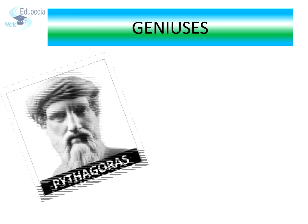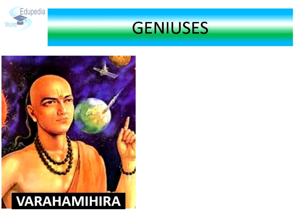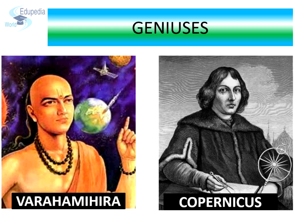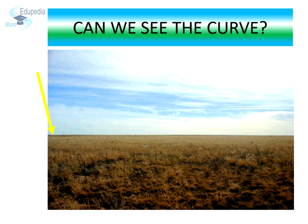Geniuses like Pythagoras, Aristotle, Varamira, and Copernicus all supported the idea that the Earth is spherical in shape, but the most successful attempt was made by Ferdinand Magellan in the year 1520 by circumnavigating the Earth. We have all been told that the Earth is round but this is not something our day-to-day experience can easily confirm.